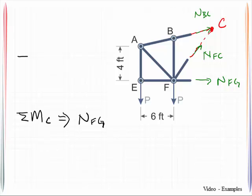Then I can look at the intersection of a couple of other bars. So look at this. Bar FC and bar FG intersect at point F. So if I sum moments about point F I would then be left with being able to find the force in bar BC. So remember I'm just looking for the intersection of those projected lines.